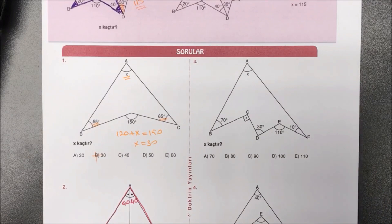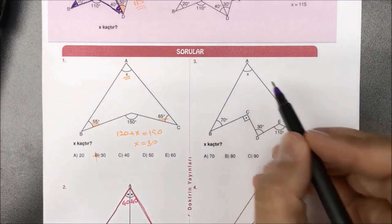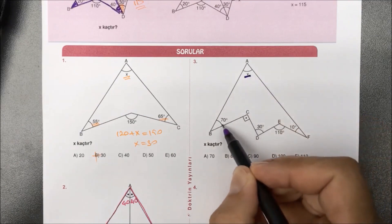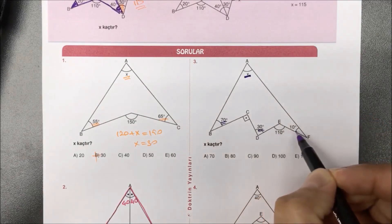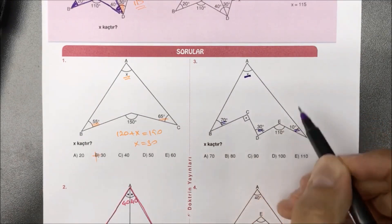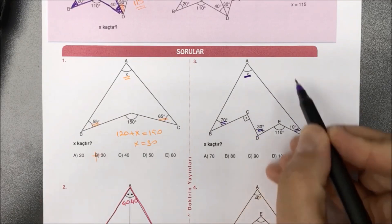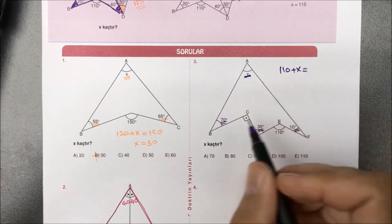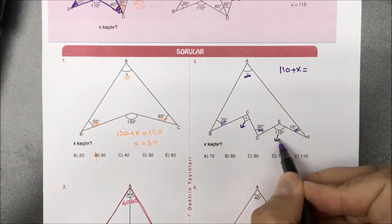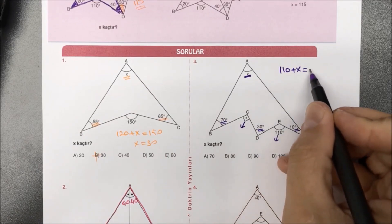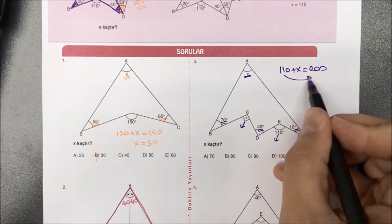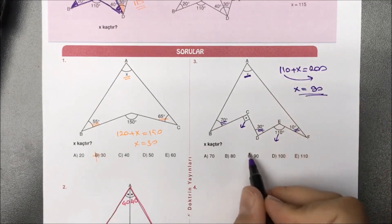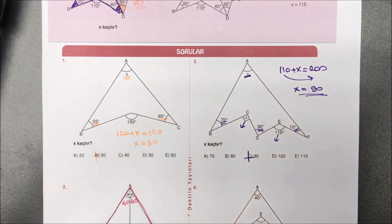Üçüncü soruya geldik: mecbur içerideki açıların toplamı dışarıdaki açıların toplamına eşittir diyeceğiz. X var, 70 var, 30 var, 10 var içeride: 70 artı 30 100, artı 10 110; 110 artı X eşittir dışarıdakileri toplayalım: 90 ve 110 var; toplarsak 200. 110'u karşı tarafa atacak olursak aradığımız X yanıtı 90 olarak bulunmuş olur.